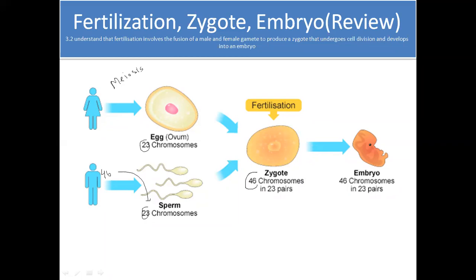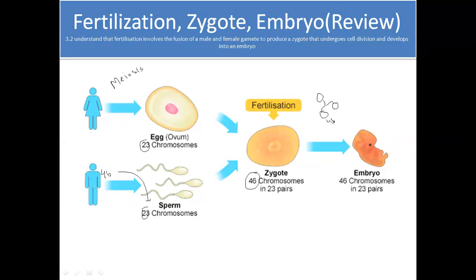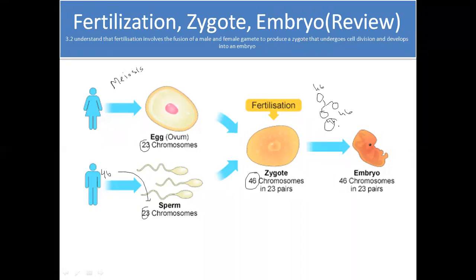The zygote has 46 chromosomes. It will start to divide by the process of mitosis, producing two cells both having 46 chromosomes. Again, in these two cells the process of mitosis will happen — they will make four cells, then four will convert into eight cells, and all cells contain the same number of chromosomes. So mitosis keeps the chromosome number constant. When egg or sperm are developing, the chromosome number should be converted into 23 so that after fertilization it again gets 46.